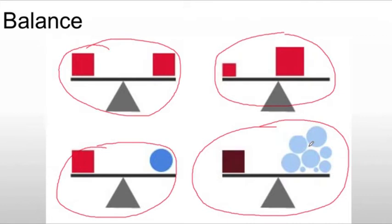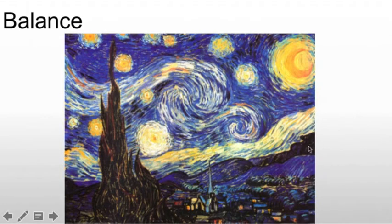It doesn't need to be symmetrical, but it does need to balance. So as an example, let's look at Starry Night. And of course, this is a very famous painting by Van Gogh. And if we take it apart, you'll notice that it does, in fact, balance.